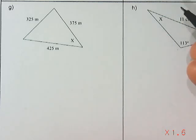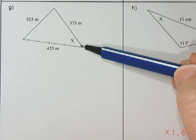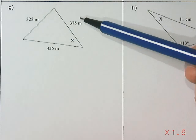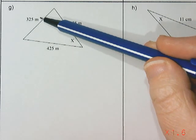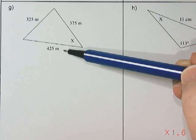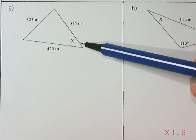In this question, we are solving for X in the following triangle. When I look at this triangle, I see that I have three side lengths: 325 meters, 375 meters, and 425 meters, no angles, and we're trying to find angle X.